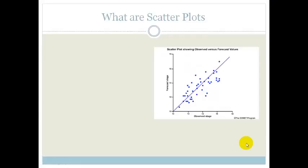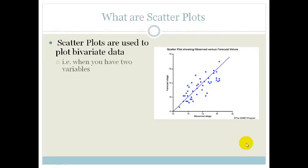So this thing here is a scatter plot. Basically it is a graph that is used to plot bivariate data. In other words, data when we have two variables.